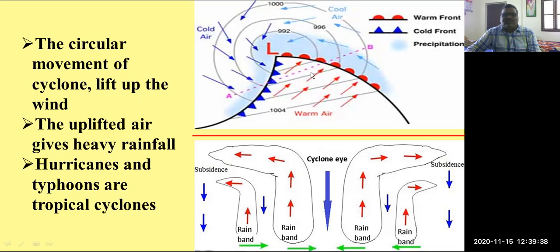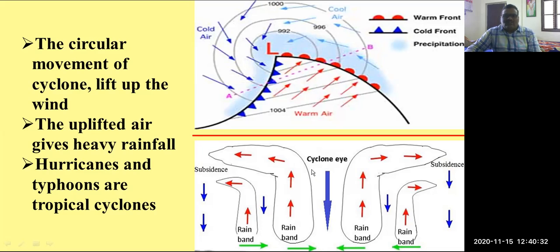The circular movement of the cyclone lifts the wind upward, and the uplifted air gives heavy rainfall. The center of the cyclone is called the eye of the cyclone. The light-weight air, which is heated by the ocean surface, moves upwards, expands due to its light weight, cools down at higher altitudes, and tries to reach the earth. While reaching the earth, it gives rain and forms a circular flow — this is called a cyclone. This happens near the ocean parts of the tropical areas, which is why it is called a tropical cyclone.